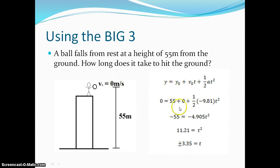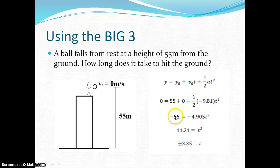If we go ahead and move the 55 to the left side of the equation and simplify this portion of the equation, we get this right here. Divide both sides by negative 4.905, you get 11.21. That equals t-squared. You take the square root. The answer is plus or minus 3.35.